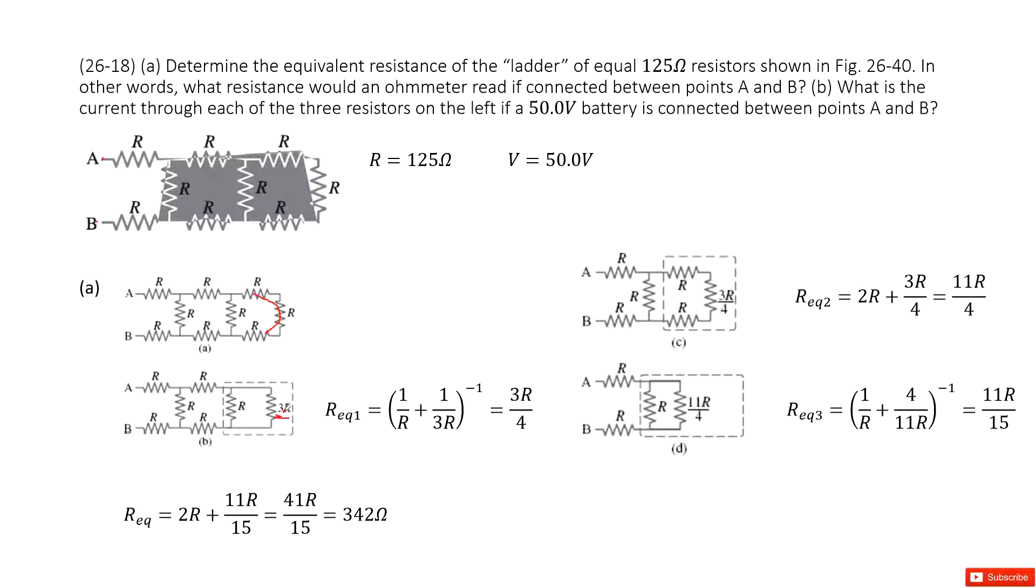Now we can see, look at this box. This is one resistor. This resistor does a parallel connection with 3R. So we can get the equivalent resistance for this box. This is a parallel connection. So we can see it becomes 3R over 4.